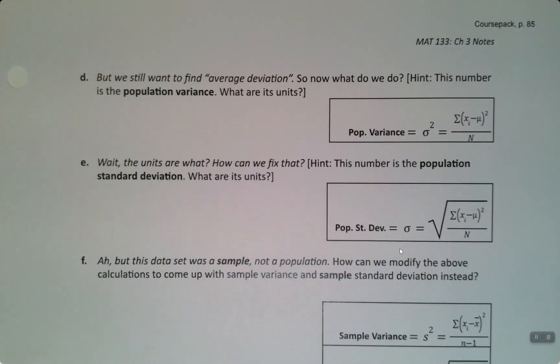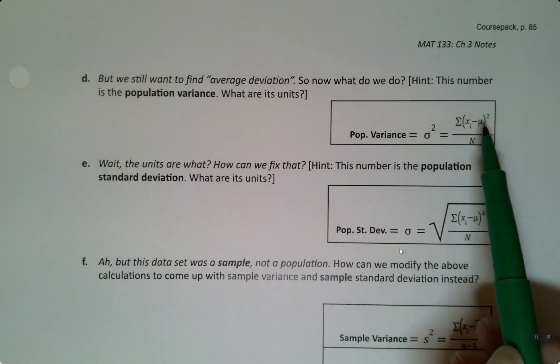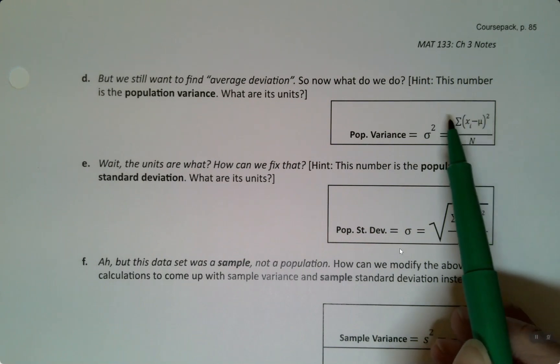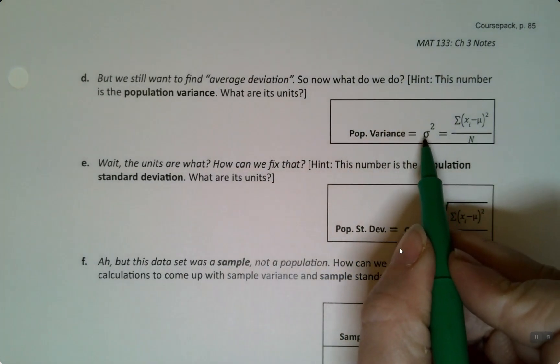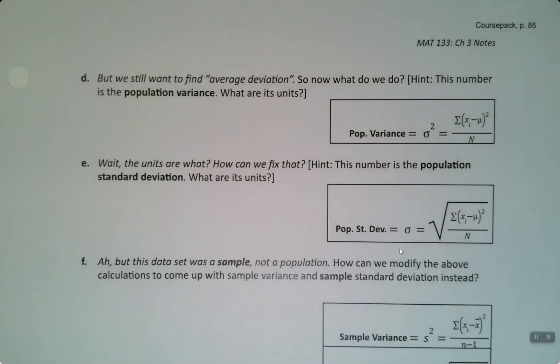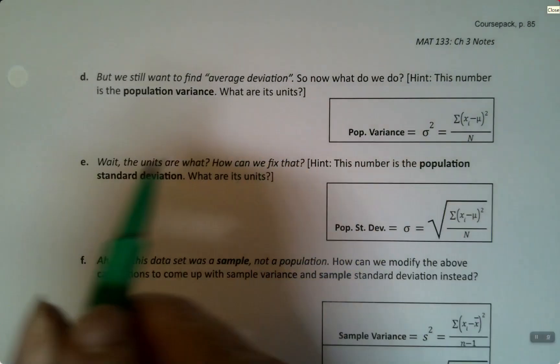Let's think about what we can do. We could divide, so we added up all those values, right? We took the value minus the mean, we squared them, we added them all up. Lovely. Then we could divide by how many there were.